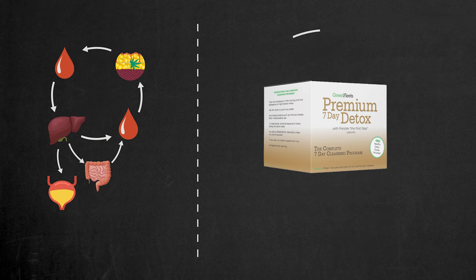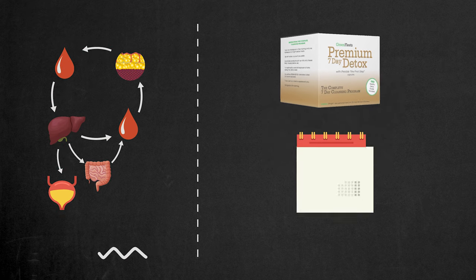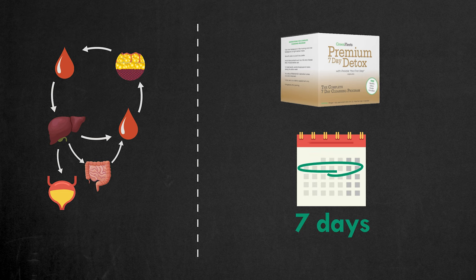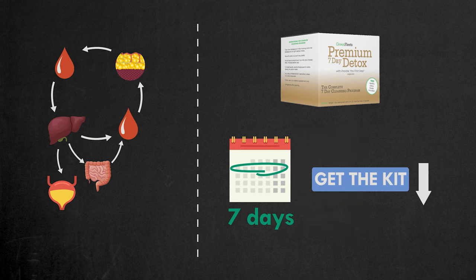If you want to detox in just 7 days, use the premium 7-day THC detox kit. This kit from Greenfleet already contains the required ingredients to speed THC removal from your body. It will remove all traces of marijuana from your system in just 7 days, and improve your overall health. Click on the link in the description to get this kit while it is still in stock.